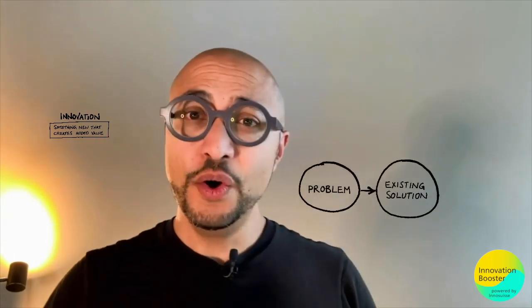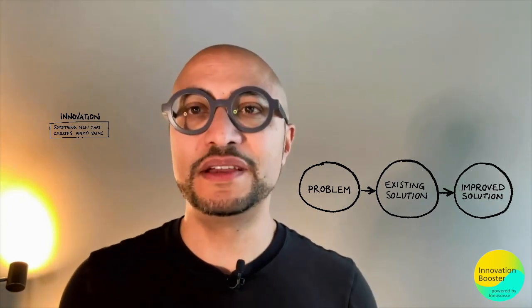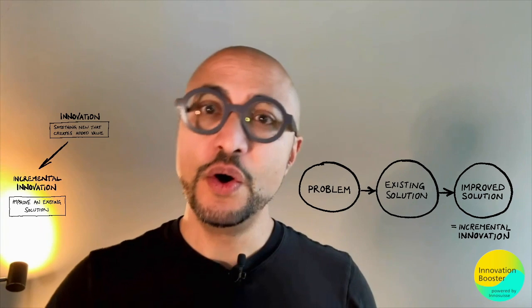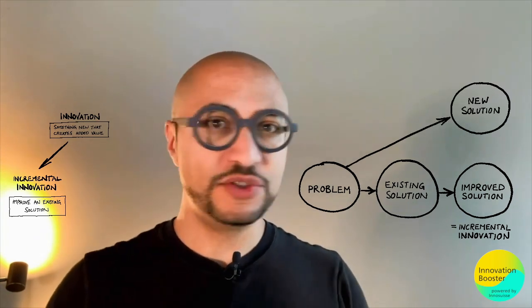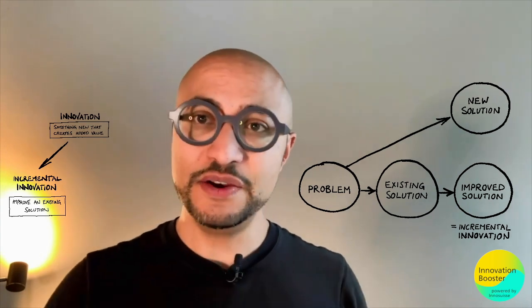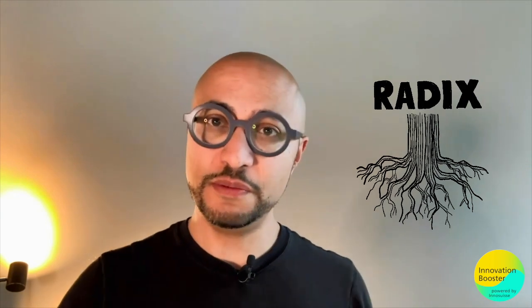Let's briefly repeat how radical innovation was explained previously. When we innovate to solve a problem, we can do so in two ways: we can either improve an existing solution step by step — then we speak of incremental innovation — or we may set out in search of a completely new solution to the problem, thanks to new knowledge or new technology, and then we speak of radical innovation. Radical comes from the Latin word radix and means root; a radical innovation goes to the root of a problem and looks for new ways to solve it.